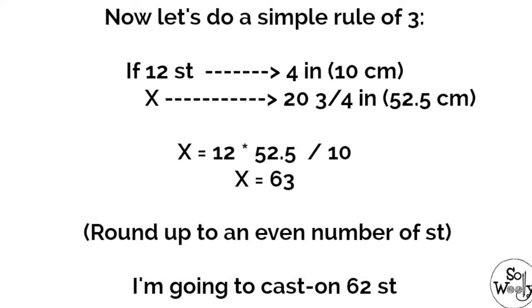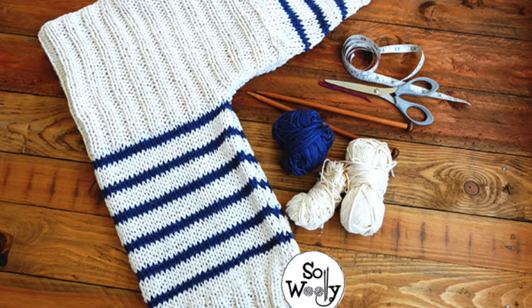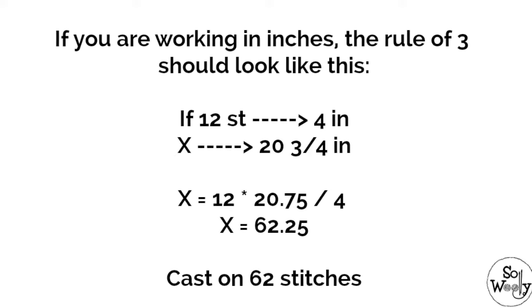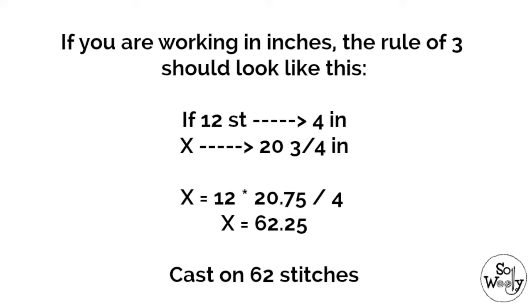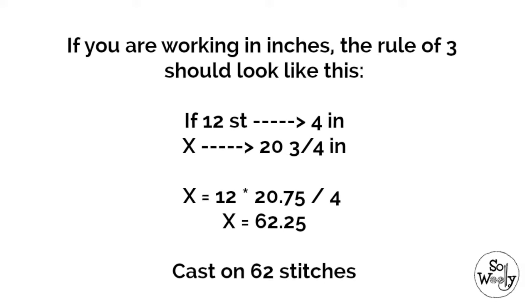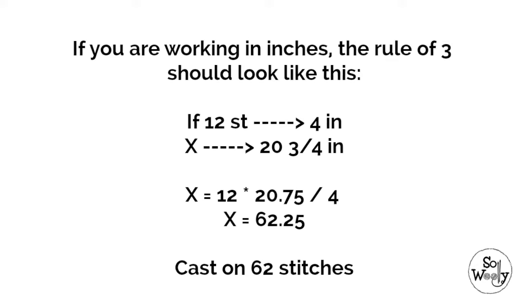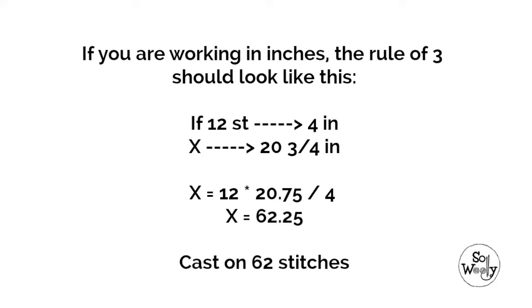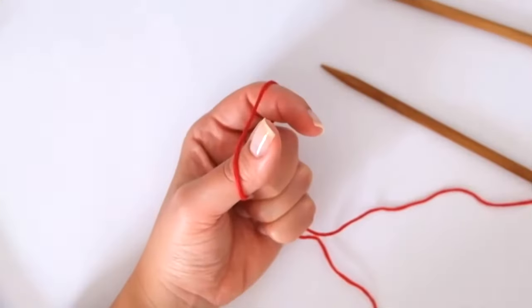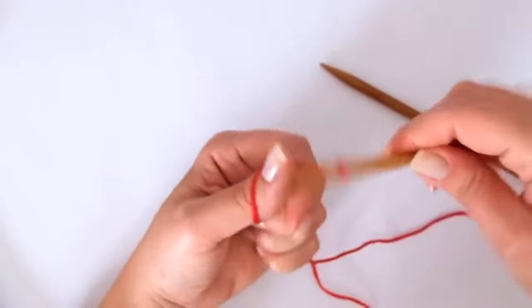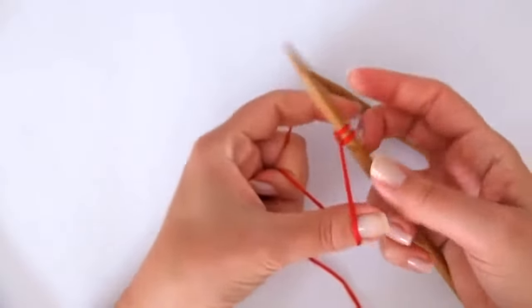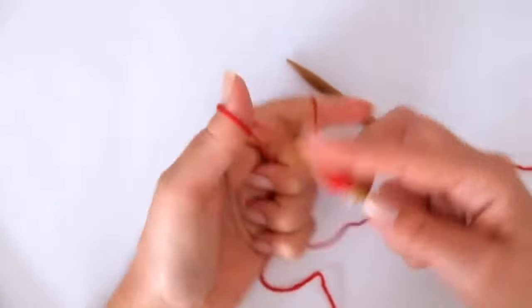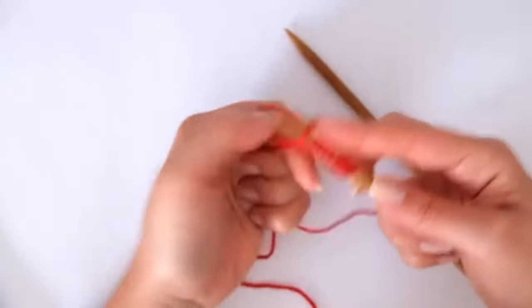Multiply 12 by 52.5 and divide it by 10 and the result is 63 stitches. Round up to an even number of stitches, so I'm going to cast on 62. It could also be 64 — doesn't matter. Now if you're working in inches, the rule of three should look like this: if 12 stitches equals 4 inches, 20.75 — how many stitches are? Multiply 12 by 20.75 and divide it by 4. The result is 62.25, so cast on 62 stitches. Remember we need an even number. So using the smaller needles we're going to cast on the number of stitches that you got, using the cast on method you prefer.